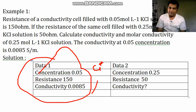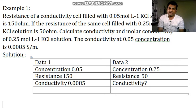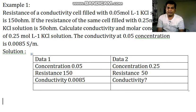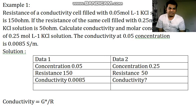After finding G star value, put this value and find out the conductivity. Which formula in this case you have to follow? We have to follow this formula: conductivity equals G star divided by R. You are given resistance, so first find out G star by using this.